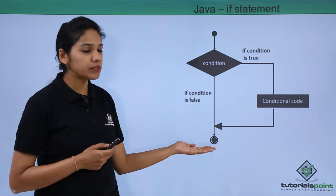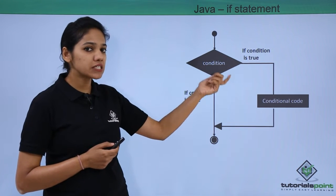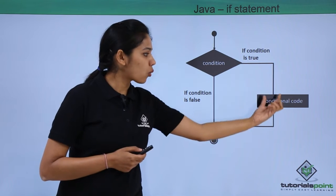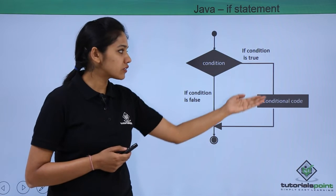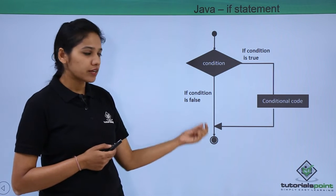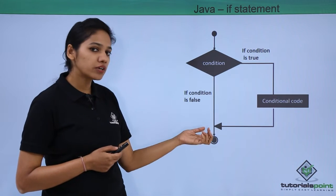This diagram will enable you to understand. It says that if the condition is true, then please go execute the block of statements. Once the condition is done, please execute it. If the condition is false, then you need to come outside.